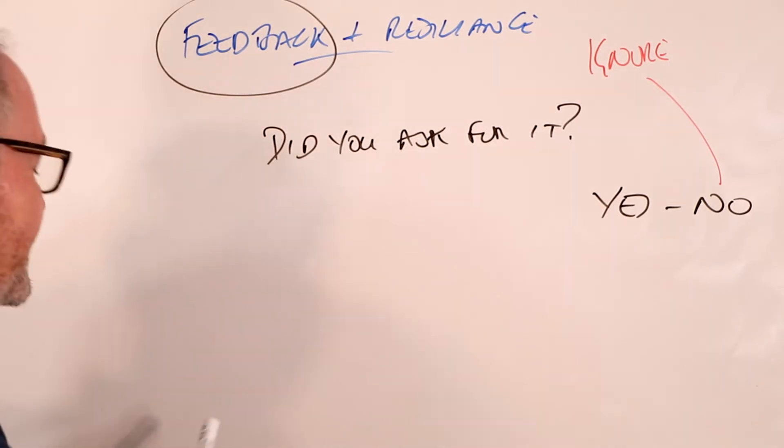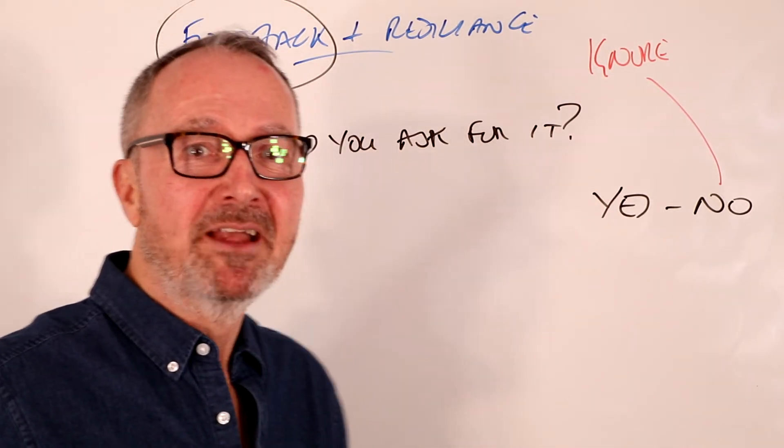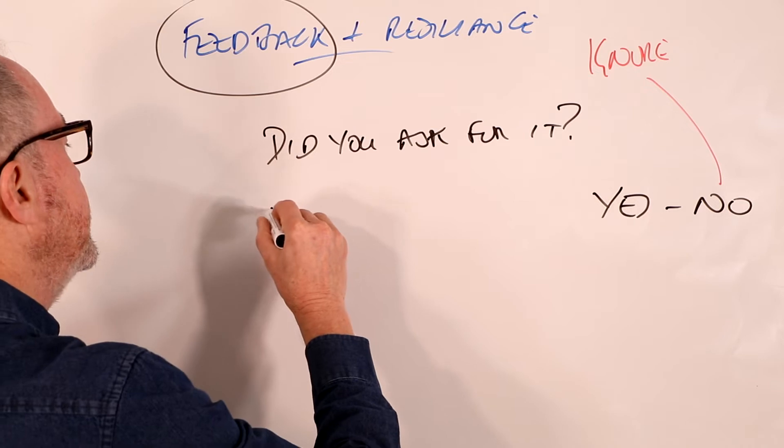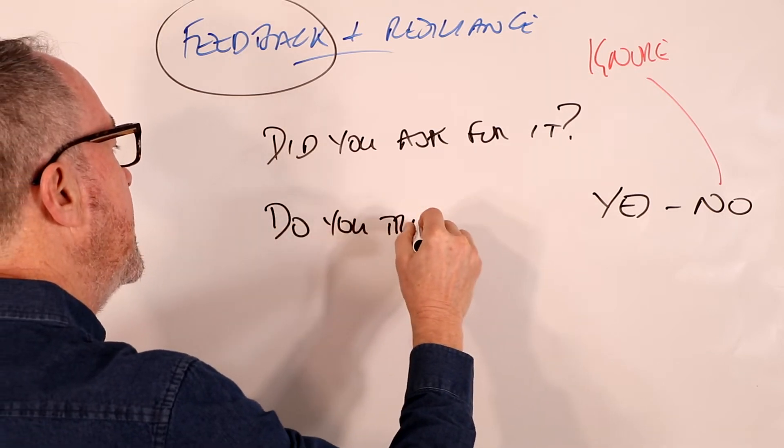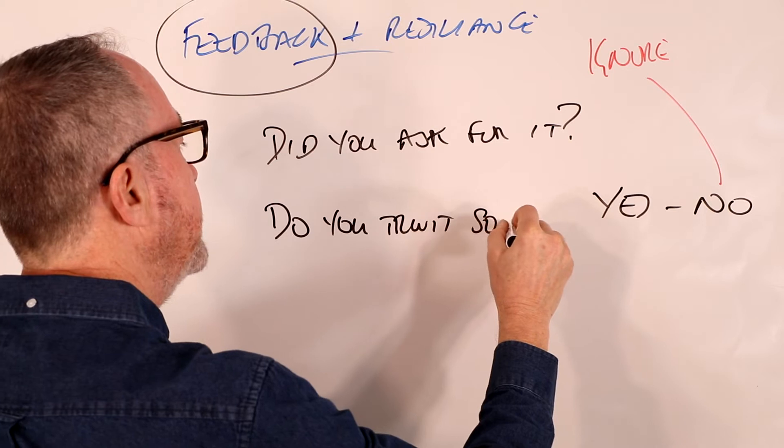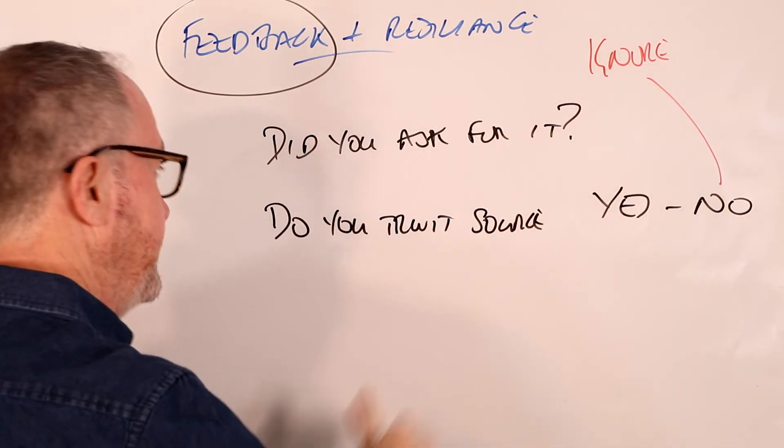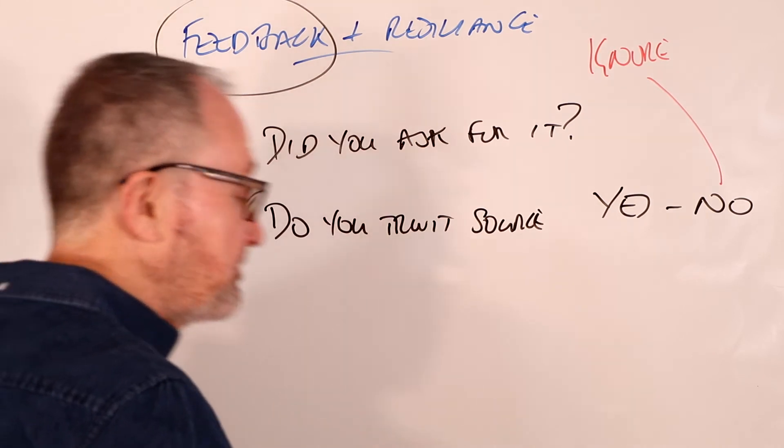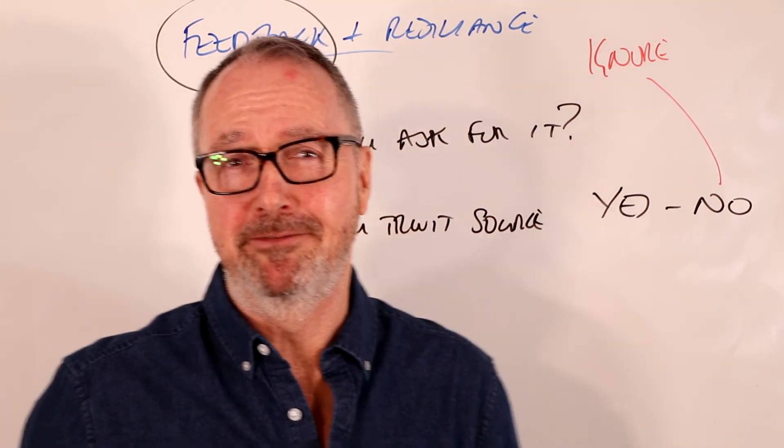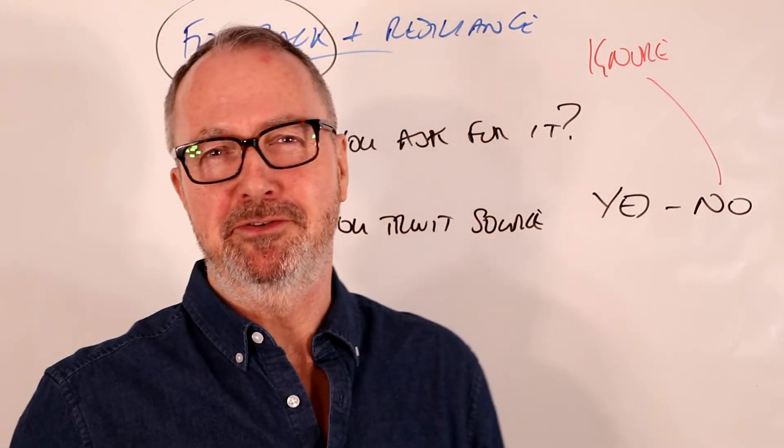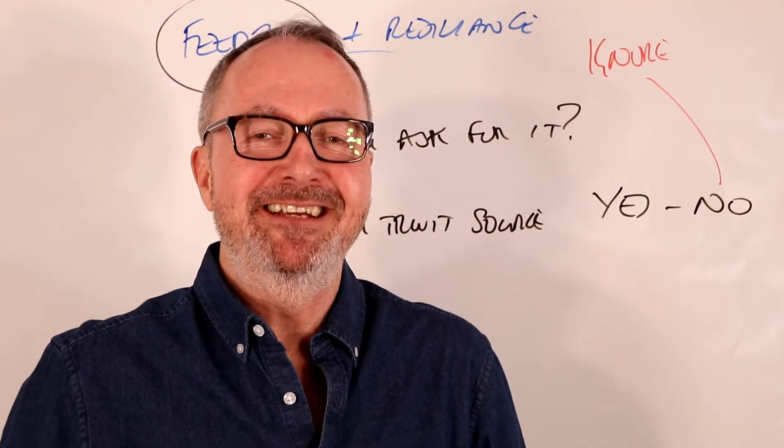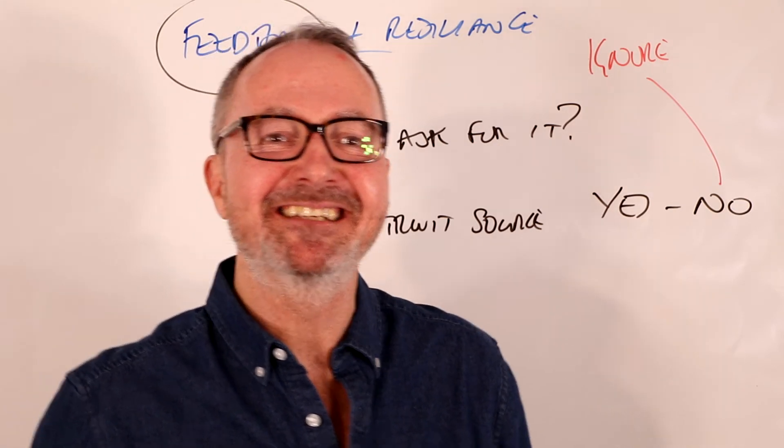The second question is: do you trust the source? Again, if it's no, you ignore it. If it's yes, you go on to the next question. So if you don't like the person giving you feedback, you don't trust them, you don't think much of them, just ignore it.